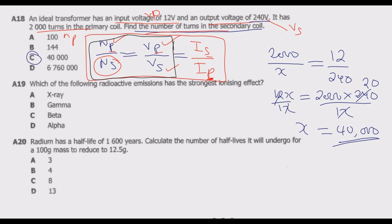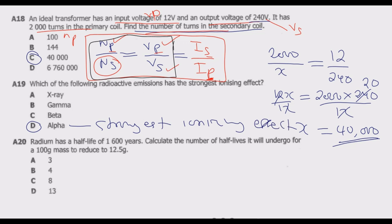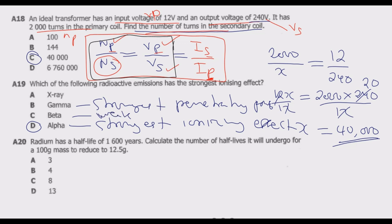Question 19: which of the following radioactive emissions has the strongest ionizing effect? Alpha has the strongest ionizing effect. Gamma has the strongest penetrating power. Beta is described as weak ionizing, while gamma ray has the weakest ionizing effect. So alpha is the answer for strongest ionizing effect.